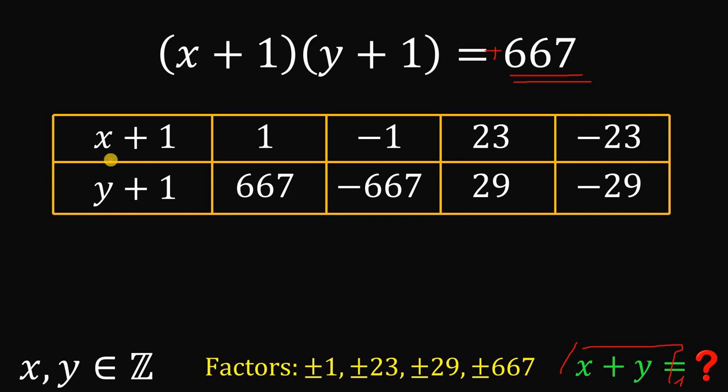So now, let's solve for the value of x. Now, we know x plus 1 must be equal to either 1, negative 1, 23, or negative 23. So, to get the value of x, what we're going to do is subtract 1 on both sides of our equation. If we subtract 1, this will give us x.